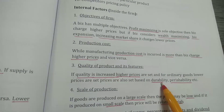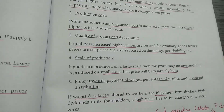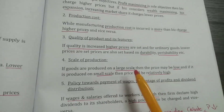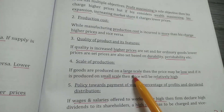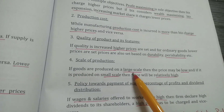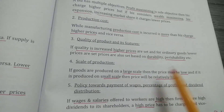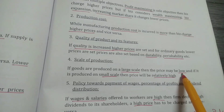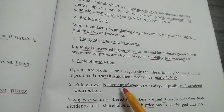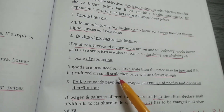The fourth factor is the scale of production. If the company is producing products on a large scale, obviously the price of the product will be quite low. If the production is on a small scale, the prices will be relatively high.